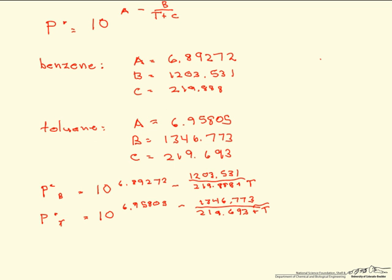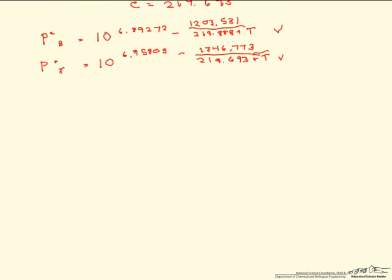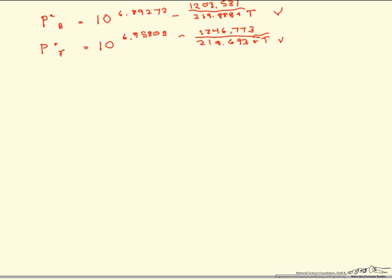So here are the A, B, C's for benzene and the A, B, C's for toluene. And so we've written both the vapor pressure of benzene as well as the vapor pressure of toluene in terms of their A, B's and C's. However, you might notice that both of them have a temperature term in there and we don't have the temperature.